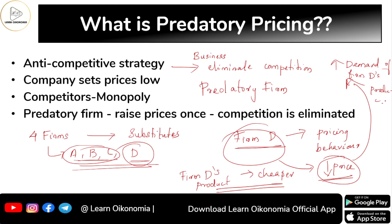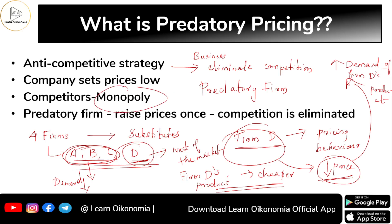All consumers will rush to purchase firm D's product. This fallen price increases demand for firm D's product while the demand for other firms' products comes down. Firm D captures most of the market — sometimes all of it — and establishes monopoly control.